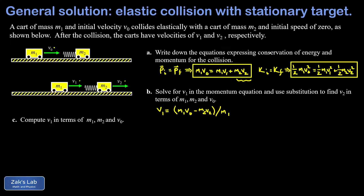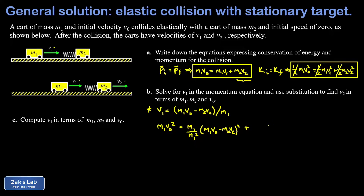Substituting into the kinetic energy equation: multiply both sides by two to eliminate the one-halves. The left side gives m1*v_naught-squared. On the right, we replace v1 with (m1*v_naught minus m2*v2)/m1, so squaring that expression puts m1-squared in the denominator. Writing it as (m1 over m1-squared) times (m1*v_naught minus m2*v2)-squared, and the last term is m2*v2-squared. We can cancel one factor of m1 from the first term.